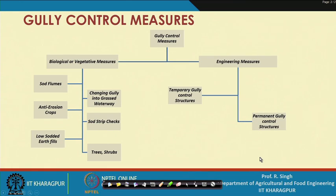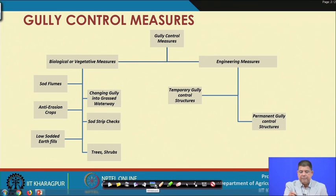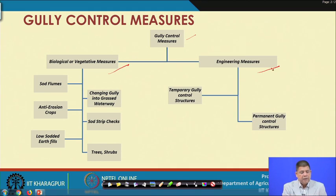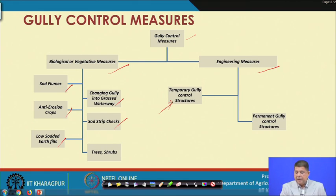A quick recap of what we discussed earlier: gully control measures can be broadly classified into biological or vegetative measures and engineering measures. Under vegetative measures there were short flumes, anti-erosion crops, low solid earth flakes, solid strip checks, changing gully into grass waterway, and trees and shrubs. We also looked at temporary gully control structures in the previous lecture, and today we look at permanent gully control structures.